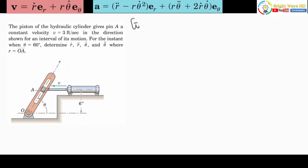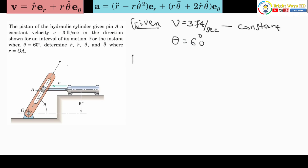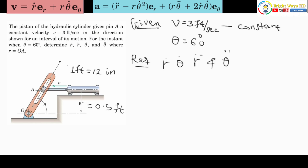Starting from the given parameters: the velocity of A is given as 3 feet per second (constant), and the required parameters are evaluated at theta equals 60 degrees. We need to find r-dot, theta-dot, r-double-dot, and theta-double-dot. Also, since 1 foot equals 12 inches, the 6-inch dimension converts to 0.5 feet — we must convert all parameters to the same unit.